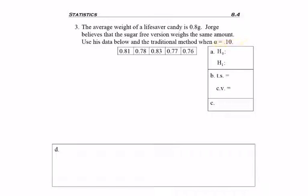Remember alpha is the significance level. The traditional method means we'll be using a critical value.